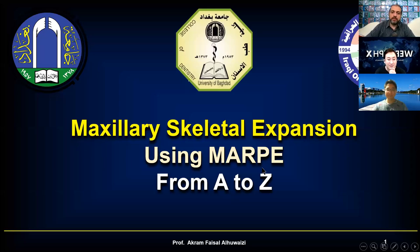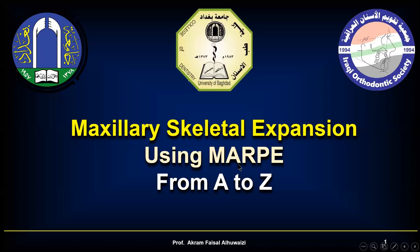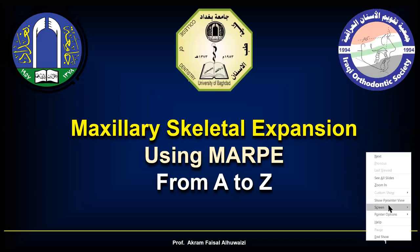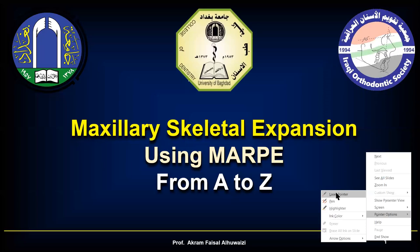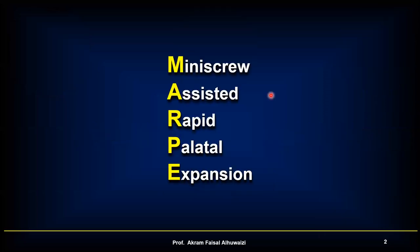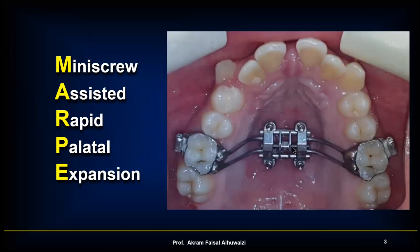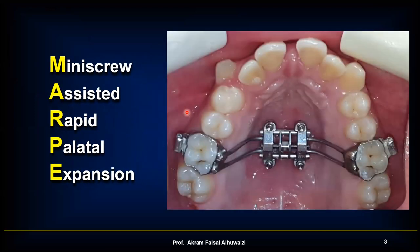So, maxillary skeletal expansion using MARPE — some people call it MARPY, some call it MARP. I'd rather call it MARP. MARP stands for mini-screw assisted rapid palatal expansion. What that means is our rapid palatal expander, the Hyrax, now has a booster — it has implants. That's the basic idea of this lecture.